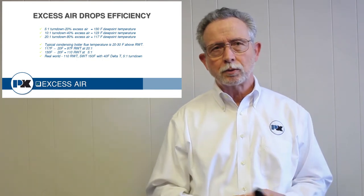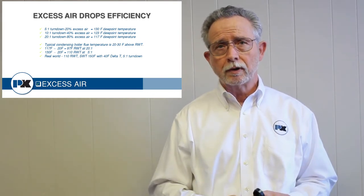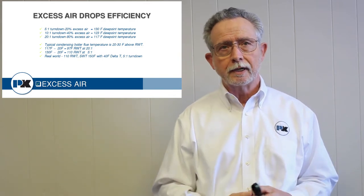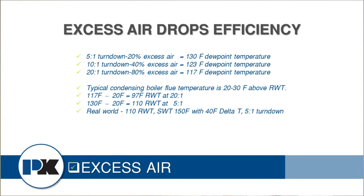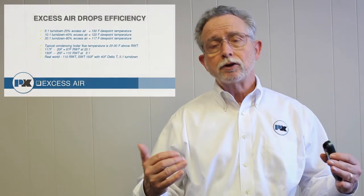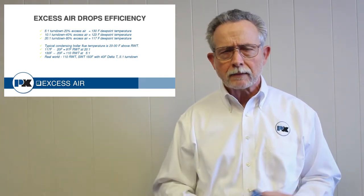On a five to one turndown we use approximately 20% excess air, which gives us the highest dew point possible — around 130 to 135 degrees depending on relative humidity. At ten to one turndown you're adding about 40% excess air, which drops the dew point to around 123 degrees. At twenty to one turndown you need 80% excess air and the dew point drops further to about 117 degrees.